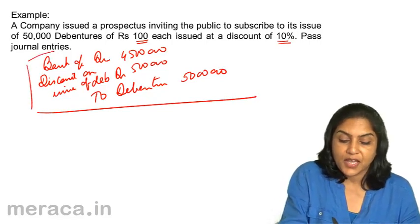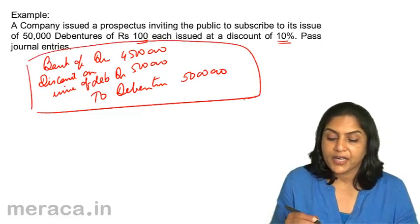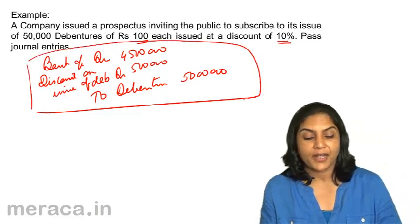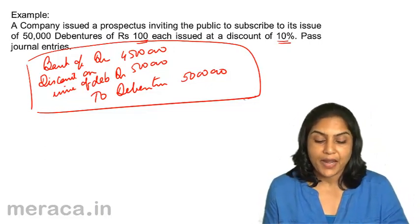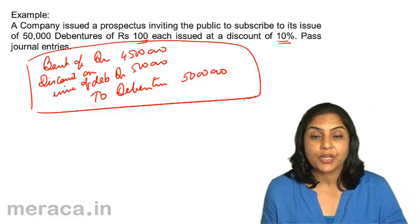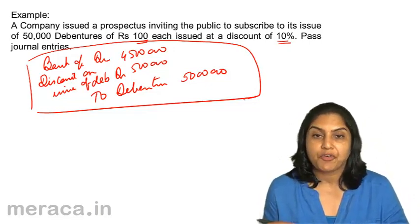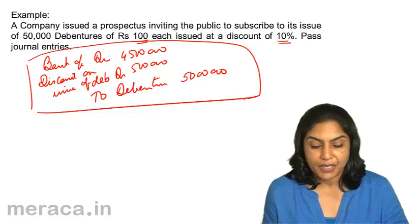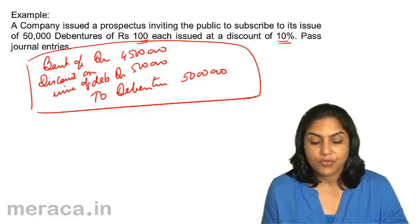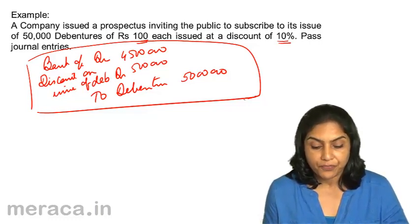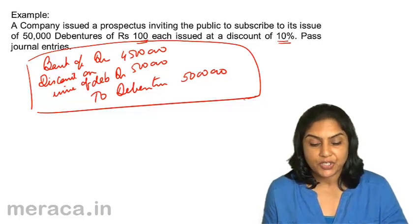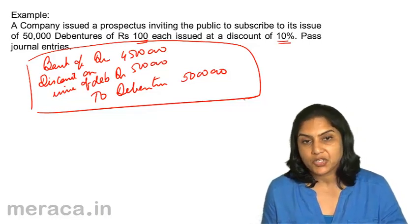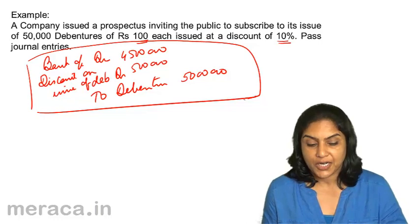Debentures would be credited with the full Rs.50,00,000. This is the final effect of the entry. When money comes in, bank account debit to debenture application. Then debenture application account debit Rs.45,00,000, discount on issue of debentures debit Rs.5,00,000, to debentures Rs.50,00,000.